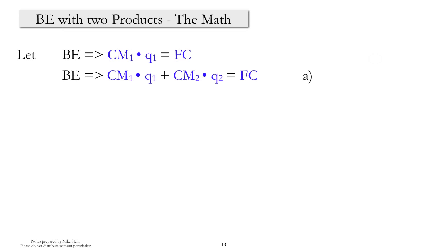If we extend the analysis to two products, then what you can see is that the amount of contribution margin collected from the individual products must sum to the contribution margin required to offset fixed costs. And to just be clear about the notation, Q1 and Q2 represent the number of product 1 and product 2 sold, respectively.